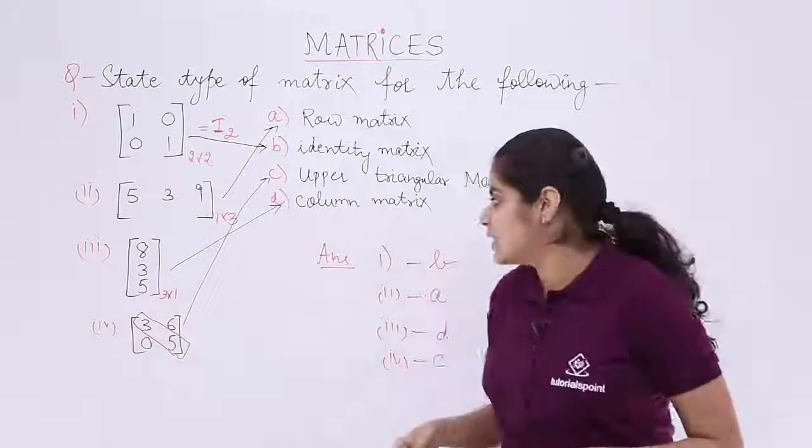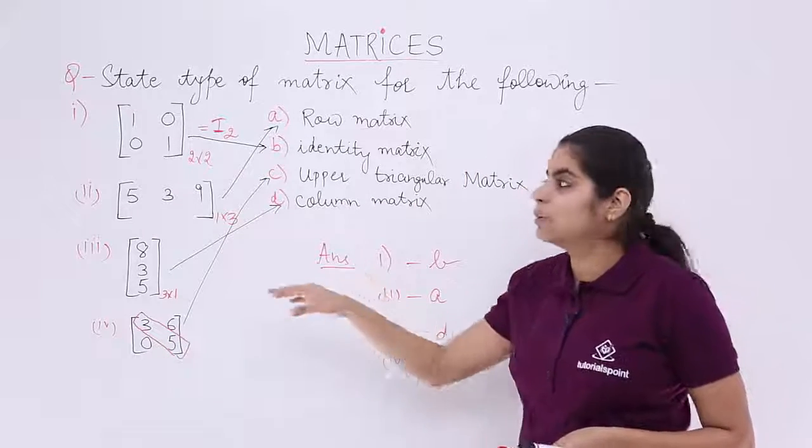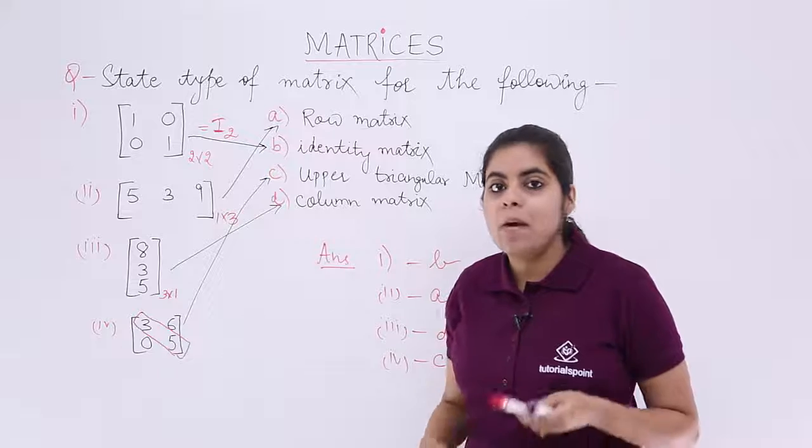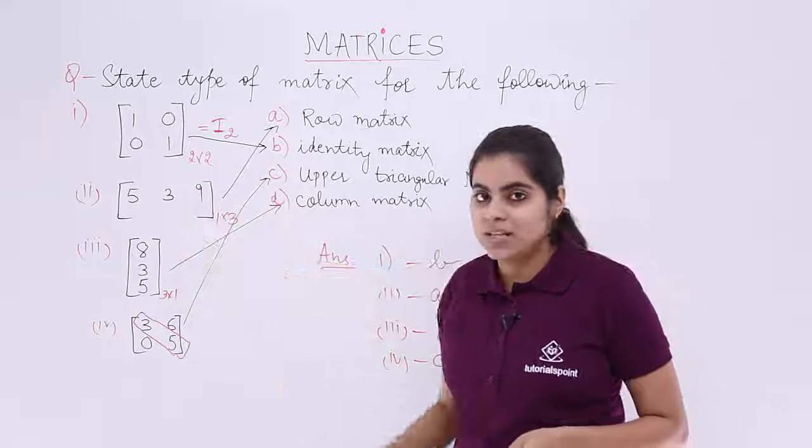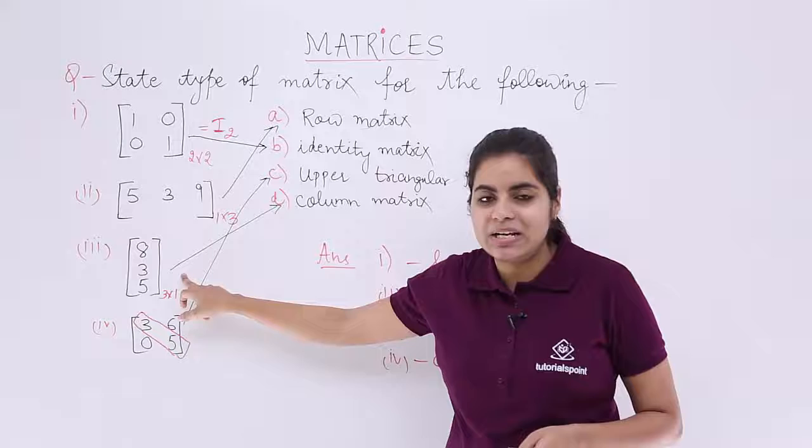And the left over was upper triangular matrix which was part C. Again, let's revise quickly that yes, part number 1 was what? Part number 1 was an identity matrix. Part number 2 was a row matrix. The third part single column so a column matrix. And the fourth part was upper triangular matrix.